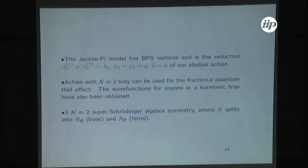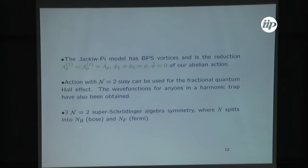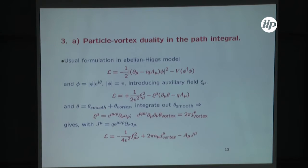We can show that this action has an N=2 supersymmetric version of the Schrödinger algebra. In the Schrödinger algebra there is a particle number N, but in this super-Schrödinger case the particle number splits into separately conserved bosonic and fermionic numbers, and then there are superpartners and so on, as usual. So let me now describe particle-vortex duality in the path integral — this is a separate topic, and after a while I'll come back to the ABJM model.